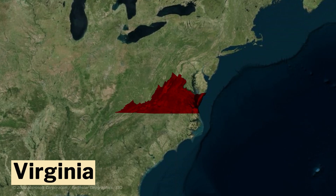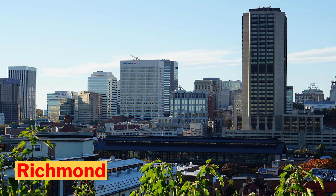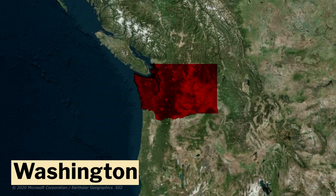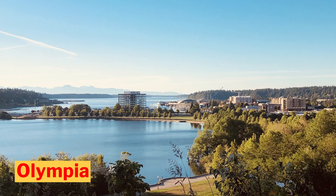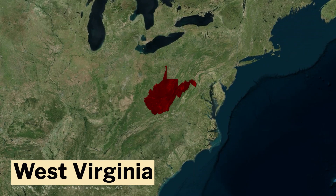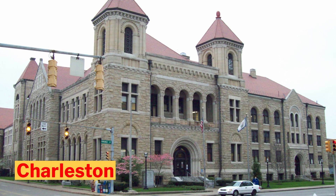Number 46, Virginia. Its capital is Richmond. This is the flag of Virginia. Number 47, Washington. Its capital is Olympia. This is the flag of Washington. Number 48, West Virginia. Its capital is Charleston. This is the flag of West Virginia.